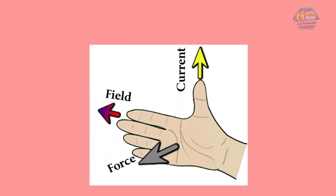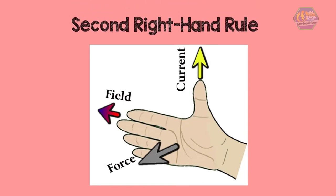The direction of the force from a magnetic field on a current running through a wire will be perpendicular to both the magnetic field and the current. This brings us to the second right-hand rule. This one helps you keep track of three directions: the direction of the magnetic field, the current, and the force. Point your arm in the direction of the current, then bend your fingers so they're perpendicular to your palm — this represents the direction of the magnetic field. Your thumb, which is perpendicular to your fingers, is the direction of the force on the wire.